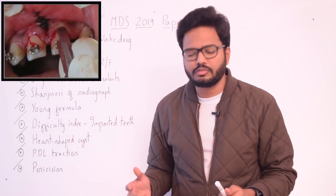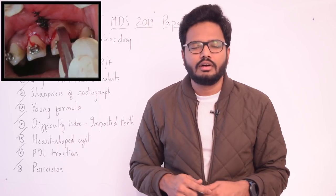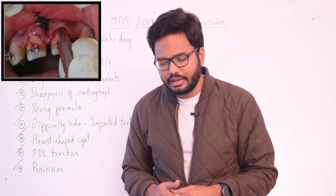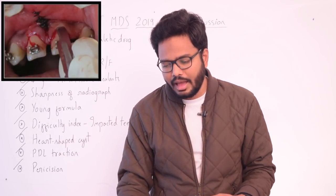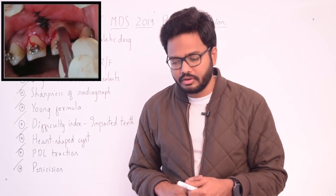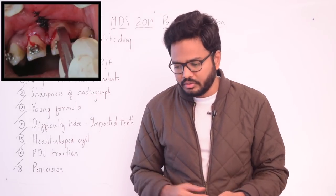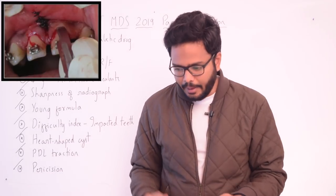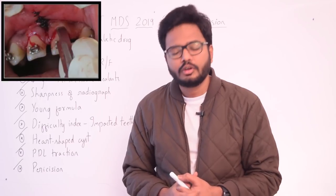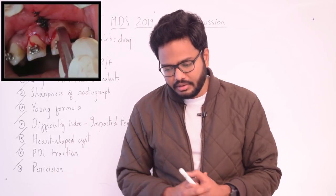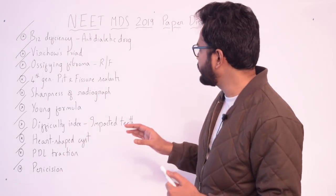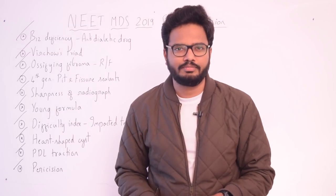Moving on to the final topic — pericision, also called circumferential supracrestal fibrotomy (CSF). It is a minor surgical procedure undertaken to counter the relapse tendency of stretched gingival fibres, especially when rotating a tooth. The transeptal and alveolar crest group of gingival fibres remain stretched and do not readily readapt to the new tooth position following correction of rotations, hence causing relapse. Pericision involves surgical sectioning of these fibres by passing a sharp narrow scalpel through the gingival sulcus around the tooth to a depth of 2 mm apical to the alveolar crest. It is generally undertaken as an adjunctive retentive procedure after correction of rotations.